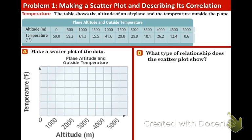We're ready for example one. The table shows the altitude of an airplane and the temperature outside the plane. So as the altitude increases, the temperature decreases. Interesting. We're going to make a scatter plot and then talk about what kind of scatter plot or correlation this is.